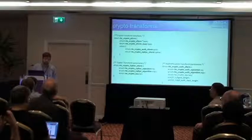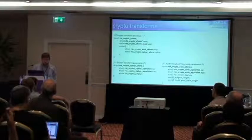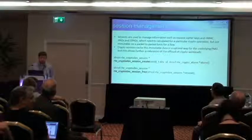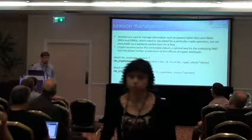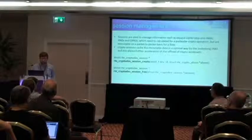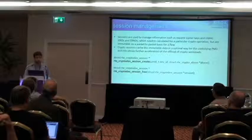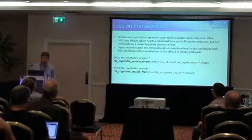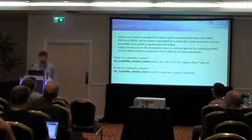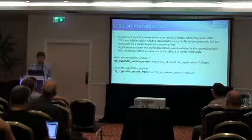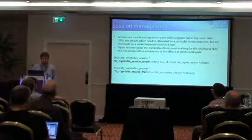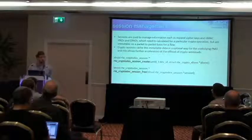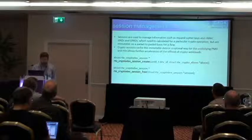You're setting the operation, the algorithm, and then providing the key. This is the structure used when creating sessions. For a flow of data, you're going to have a standard definition of what you want to do to that flow — the same encryption and authentication details for every packet. For that immutable data, you don't want to be recalculating cipher key expansions or doing ipad and opad calculations for every packet. So as done in all crypto frameworks, you do those upfront and keep that information cached, then attach it to your crypto operation.